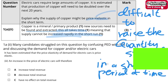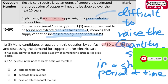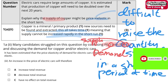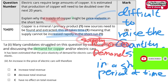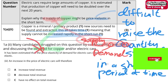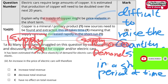Some students also struggle to distinguish whether the question is about the demand for copper or for electric cars. It must be about copper because the question states it clearly. You should talk about the supply of copper, not the demand of copper, and it's not about electric cars.